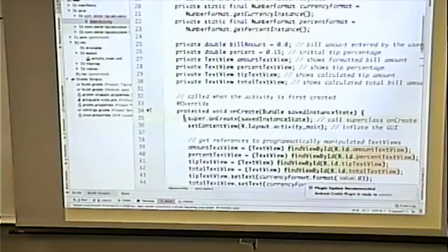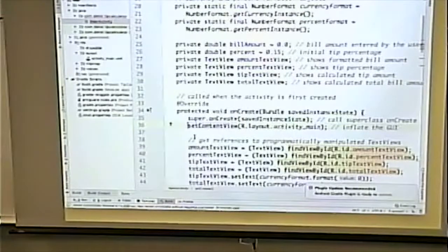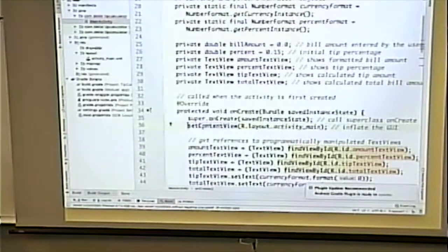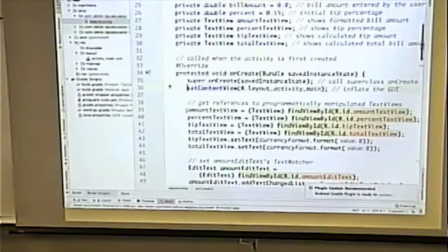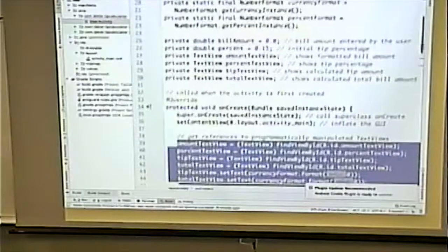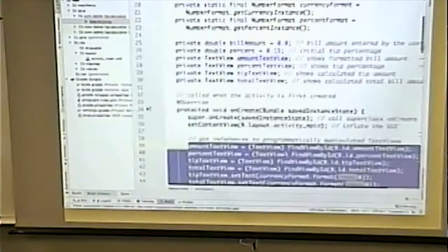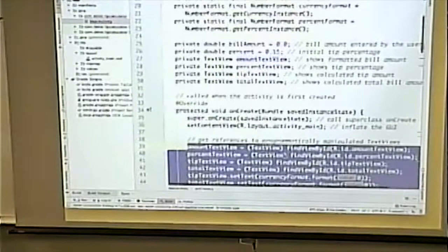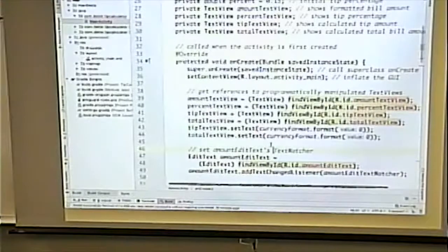We call the super classes on create method and we set the content view. Same thing we've done in every single application so far. We grab pointers to these things. And these six pointers correspond to the six instance variables that are defined up there. Or six of the instance variables defined there.